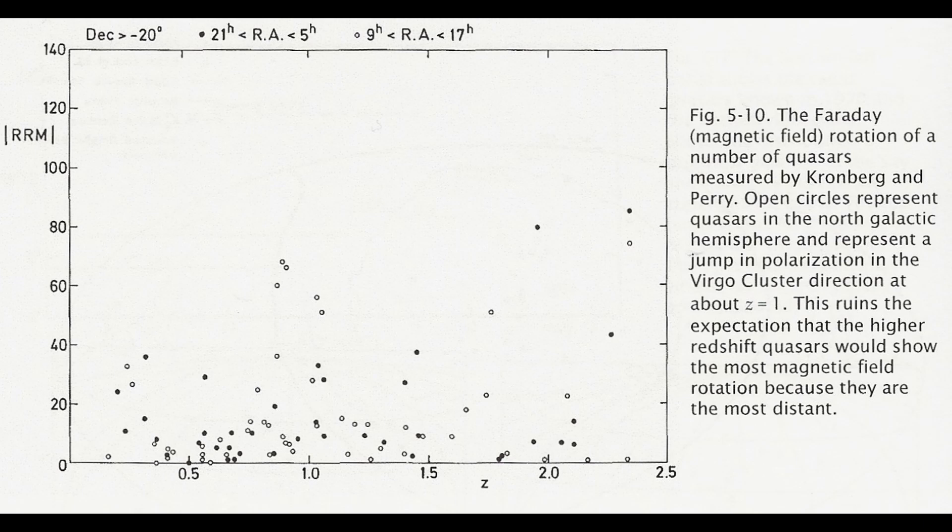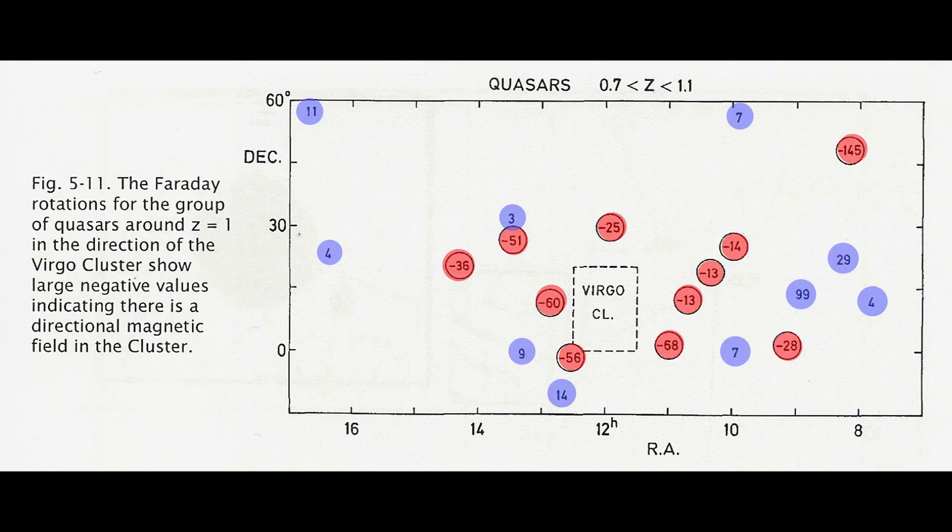If you take the z equals 1 quasars, it will come as no surprise that these are associated with galaxies inside the Virgo cluster. We also see that there is a predominance for one direction of rotation. This shows that the magnetic field is dominating in one direction. If these quasars were much further in terms of the distance, then this should look far more random than it does.